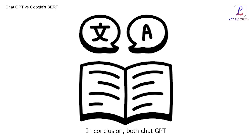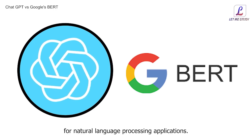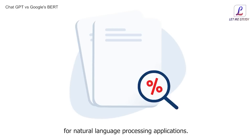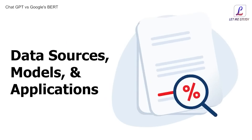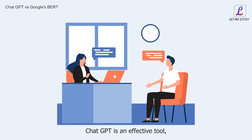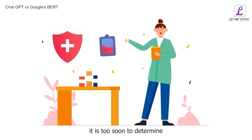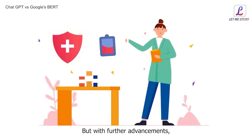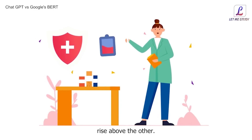In conclusion, both ChatGPT and Google's BERT are powerful models for natural language processing applications. Each model has its unique features, including their data sources, models, and applications. ChatGPT is an effective tool mainly used for creating text-based content, while Google's BERT is designed for more conversational purposes. It is too soon to determine which of these models is superior, but with further advancements, it is possible that one model may rise above the other.